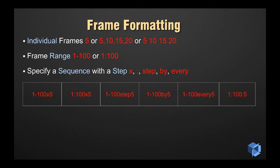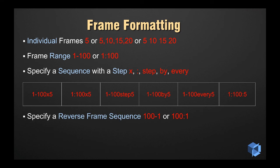Here are some examples of how each of those options would look in the frame list. To specify a frame sequence in reverse, we simply swap the frame range around. So here we enter 100-1, or alternatively 100:1.